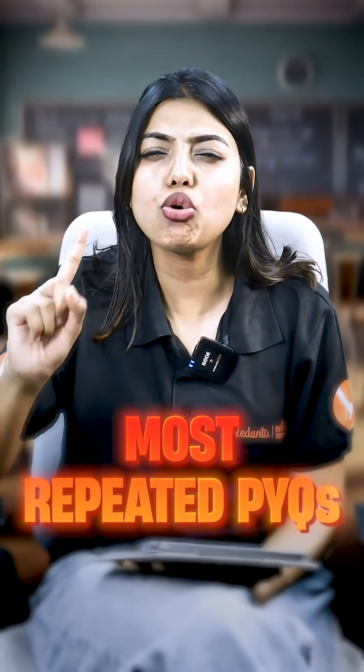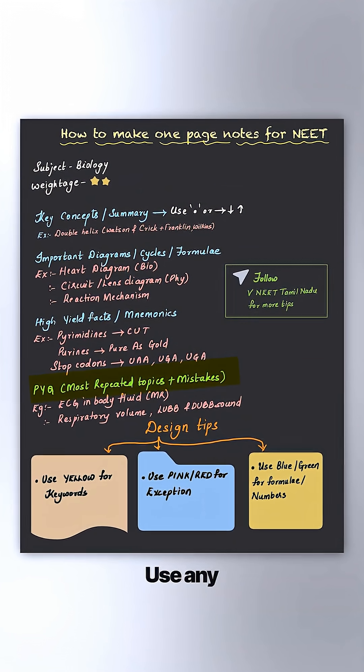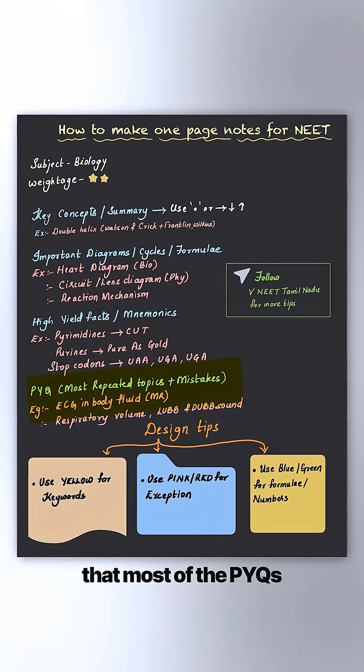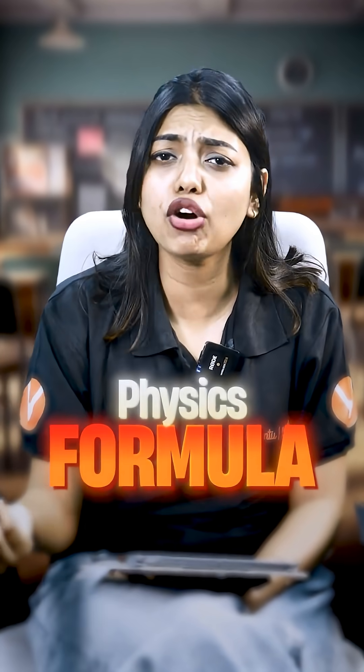Third thing: PYQs — most repeated PYQs. For example, from body fluids and circulation, every single year if a question comes, it usually comes from the electrocardiogram. So that question has to be highlighted using another colour — highlight it and write that most PYQs are repeated from here. Also write the mistakes that you tend to make from the chapter over and over again, like a formula in physics or a diagram in biology.